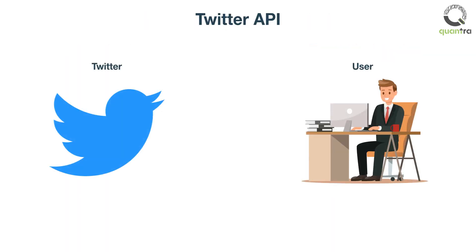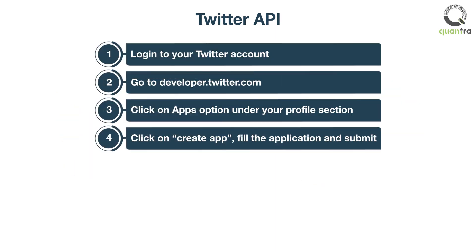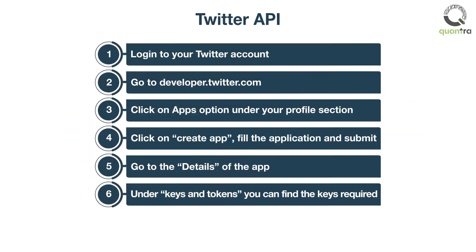To get the data from Twitter, your request must be authenticated by a set of keys. These keys help Twitter to identify you. To get the keys, you can follow the steps shown on the screen. These steps are covered in detail in the upcoming PDF unit.